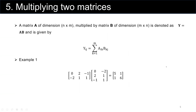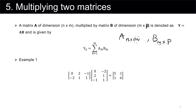Now the question is how to find the elements of this matrix multiplication. Matrix A is dimension n by m and B is n by p, so m is the common value. Each element of the product matrix C is given by the sigma from k equals 1 to m of A sub ik multiplied by B sub kj.